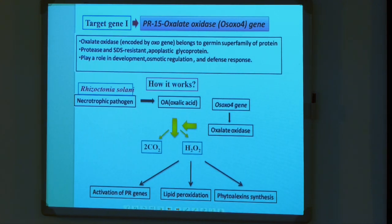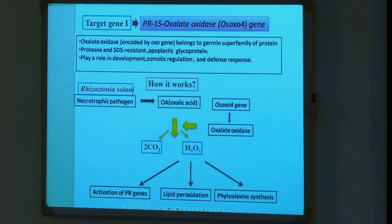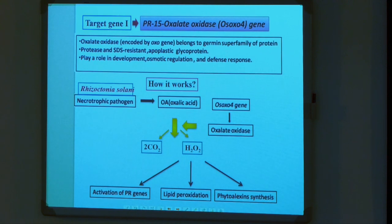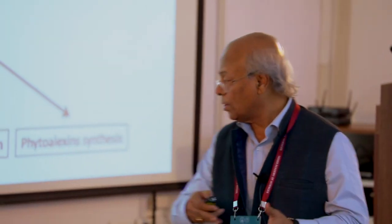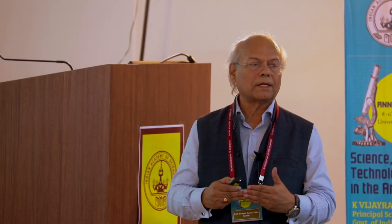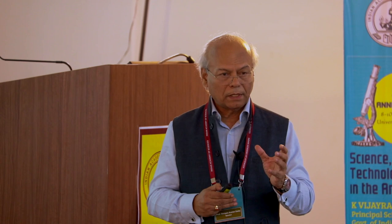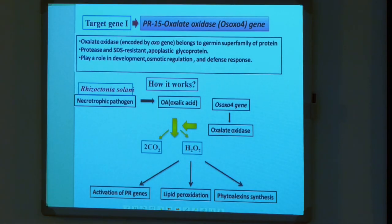One of the things we recently published — and there are many publications in other crops — we published in rice regarding the oxo-4 gene, which encodes oxalate oxidase. If we introduce that gene into the plant, CO2 levels are elevated and also H2O2, as Dr. Rao also mentioned in his talk. That also gives the plants activation of PR genes, lipid peroxidation, and phytoalexin synthesis — giving the plant protection again. With one gene, we can have three different levels of protection. With less energy, the plant activates one particular gene and can produce compounds that help it in a much better way.